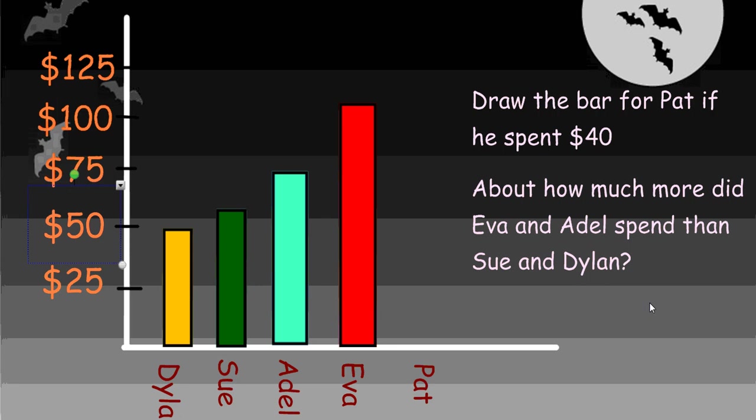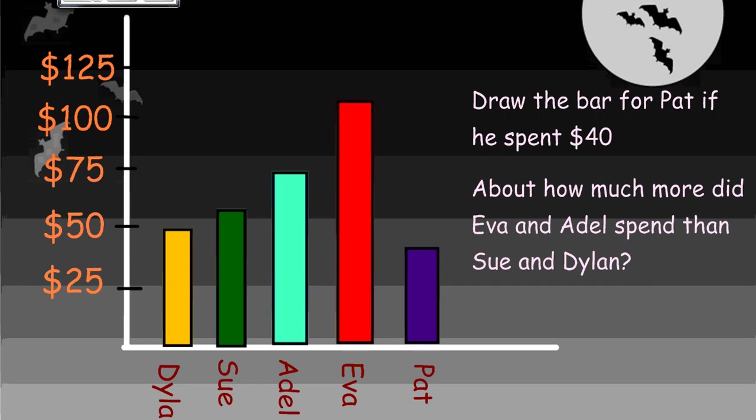Also, think about how much more did Eva and Adele spend than Sue and Dylan. Notice the words 'how much more' - again, that's comparing things. Maybe you can come up with a question that compares different things on this bar graph. Pause the screen, discuss your questions, and then you can push play and we'll move on. So how does your bar look? Did you make Pat's bar a little bit less than $50 but more than $25? It should be over halfway too because $40 is closer to $50 than it is to $25.